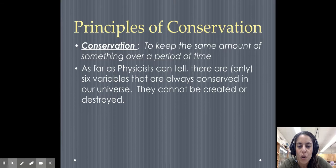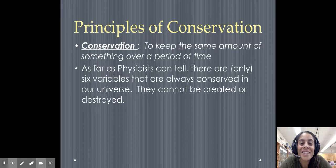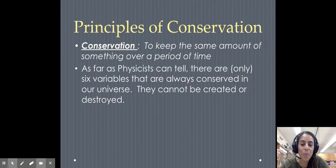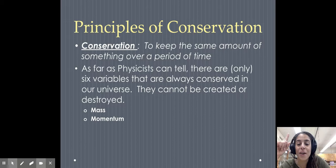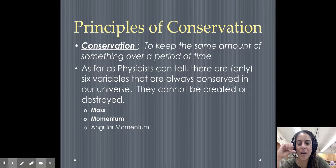As a physicist can tell, there are only six variables that are always conserved in our universe. And so we talked about that a couple videos ago. They can't be created, they can't be destroyed. So we've got mass, momentum, and angular momentum, which we don't talk much about this year.